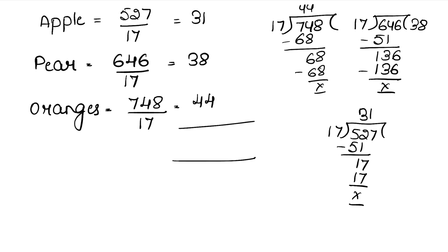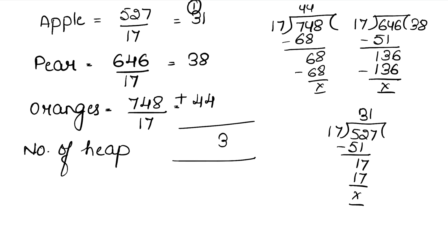Now we find the total number of heaps. Add all three: 31 plus 38 plus 44. 1 plus 8 is 9, plus 4 is 13, write 3 carry 1. 3 plus 3 is 6, plus 4 is 10, plus 1 is 11. Total heaps = 113.